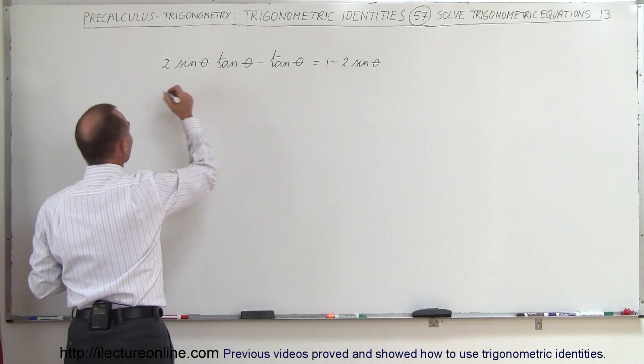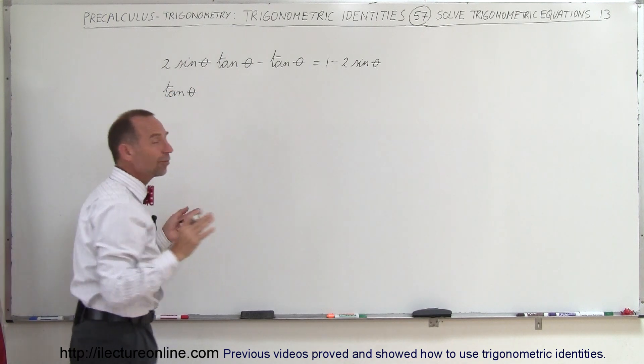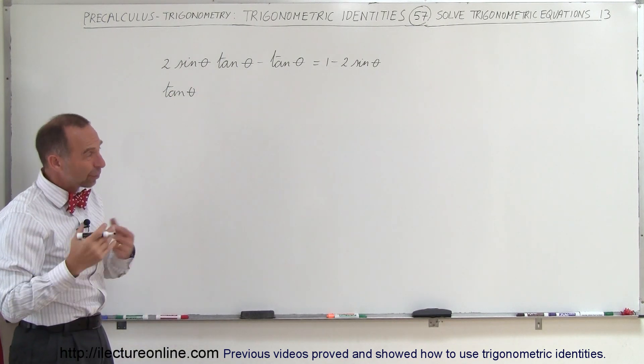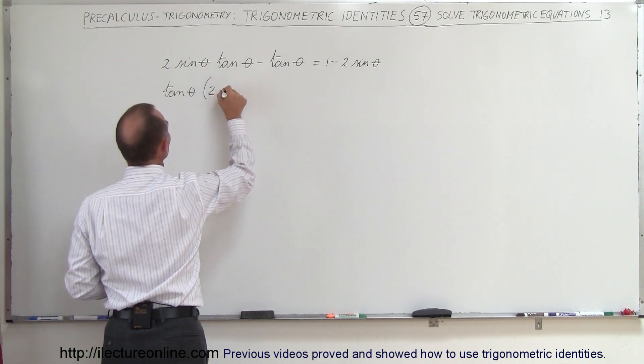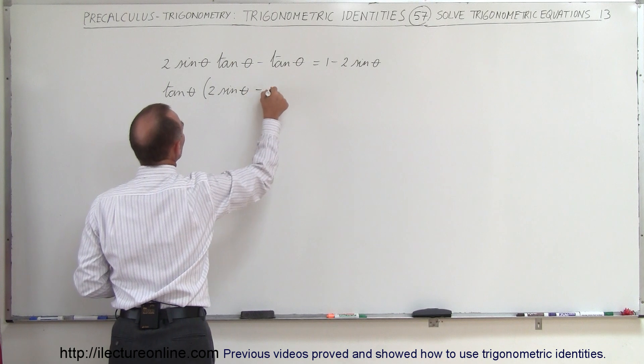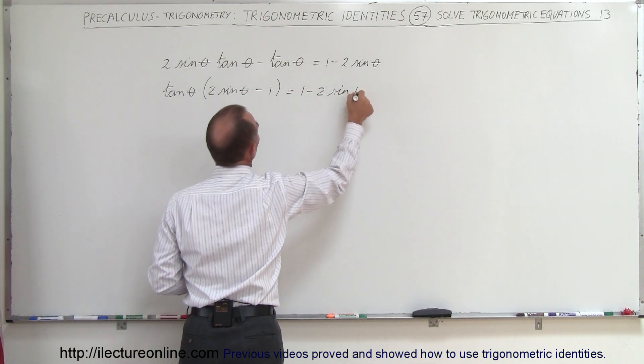So I'm going to factor out the tangent of theta, and sometimes even if you don't see that, factoring quite often gets you in the right direction. So tangent of theta times 2 times the sine of theta minus 1 equals 1 minus 2 times the sine of theta.